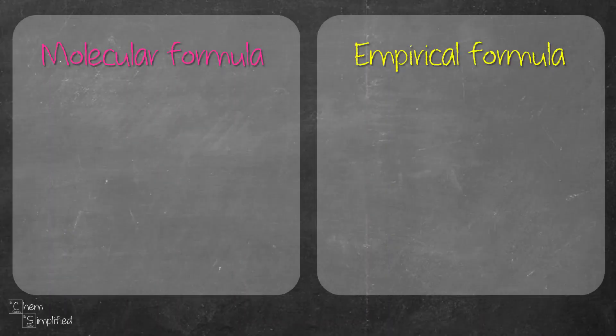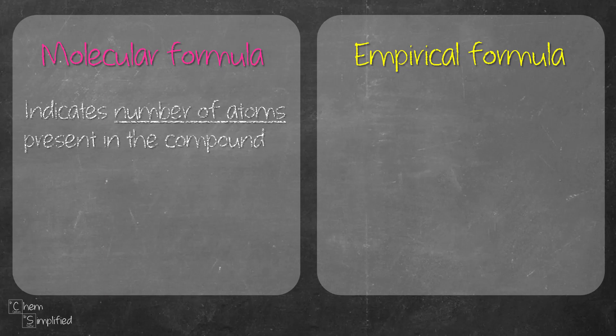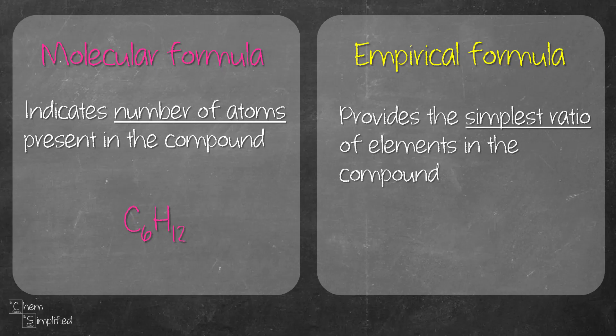Before we start to determine what is empirical and molecular formula, I think it's good if we figure out what's the difference between these two terms. Molecular formula basically tells us the number of atoms that's present in the formula. An example is C6H12. We know that there are six carbons and 12 hydrogens present.